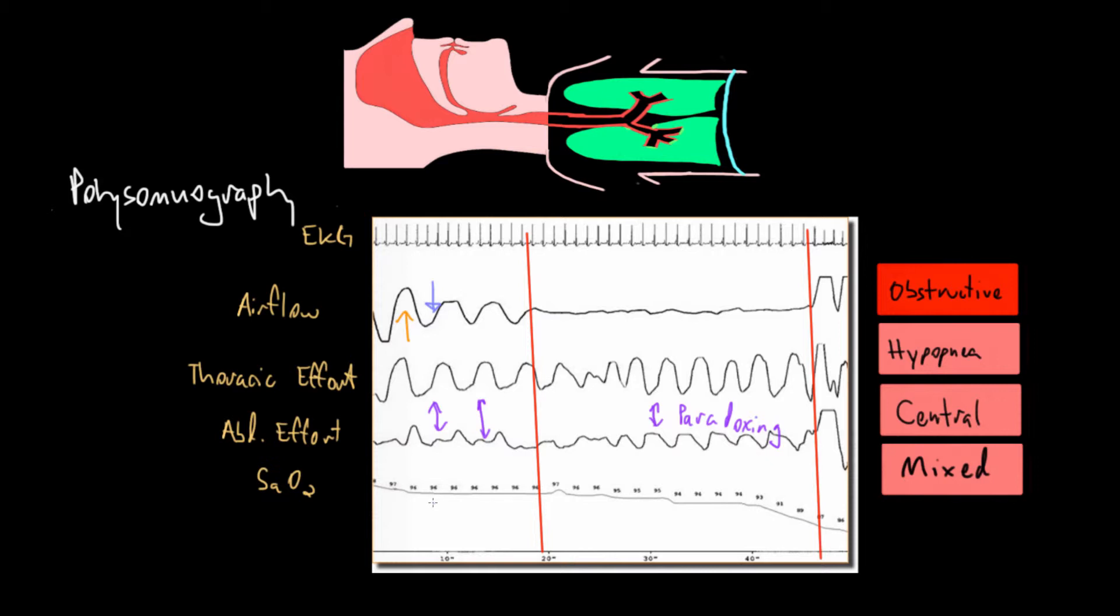In the SAO2 line, the oxygen saturation, we would expect it to drop because no air is going into the body between these red lines, and that's exactly what we see. We see it holding steady for a little bit, but then it drops down here from a high of 97 all the way down to a low of 89 and even falling even further before this patient starts to breathe again.